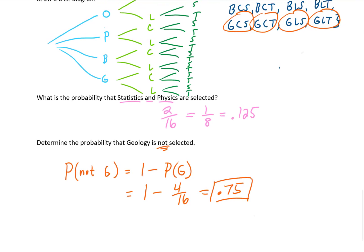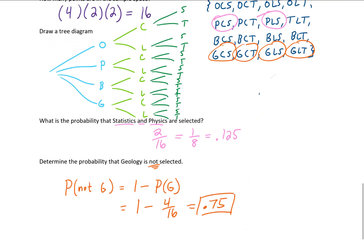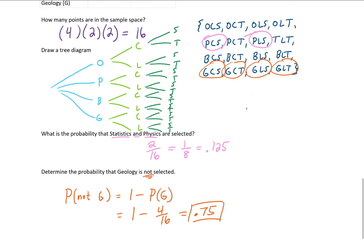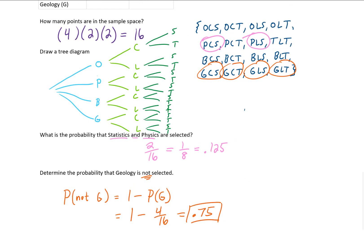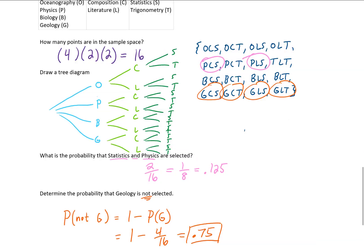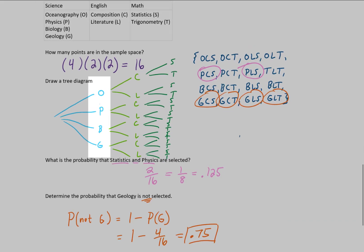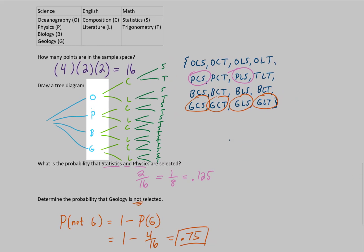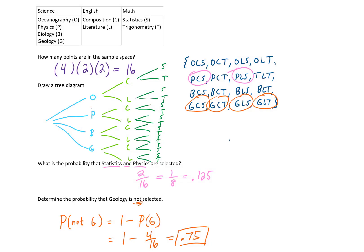That means there is a 75% chance that we are not going to select geology, which makes sense because we had four possible options for our science classes. Check out the homework for this section, send me emails if you have questions, and I'll see you next time.